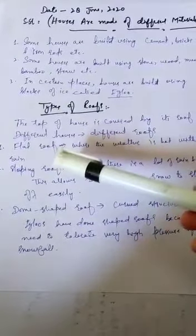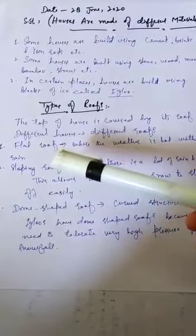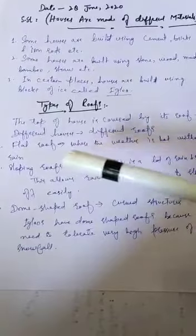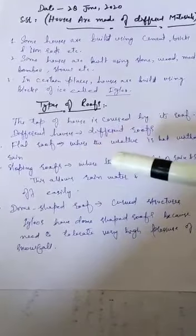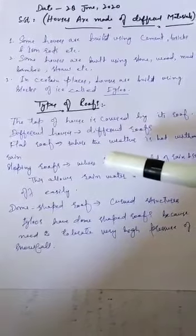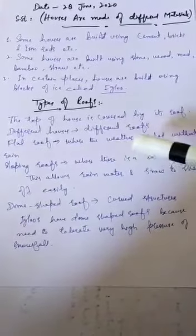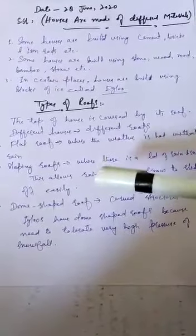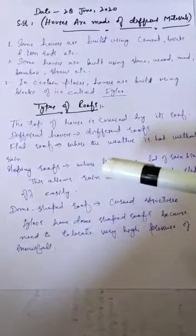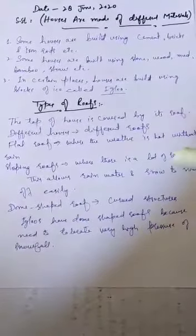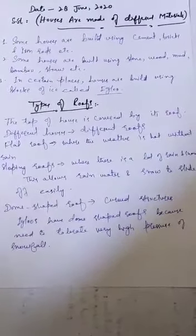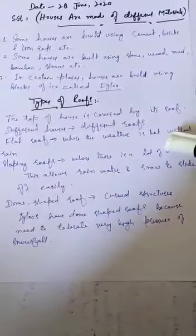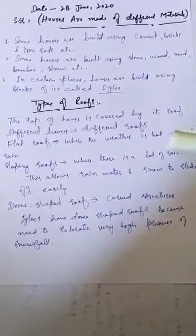The first type is the flat roof. Houses with flat roofs are found in areas where the weather is hot and there is not much rain. Flat roofs are built in places where the climate is warm and rainfall is low.